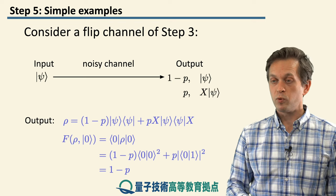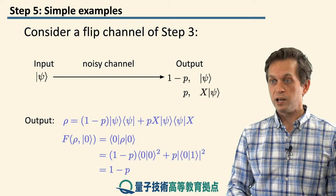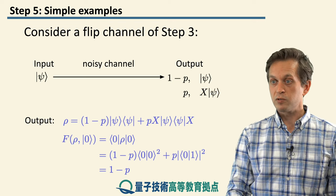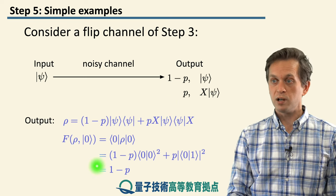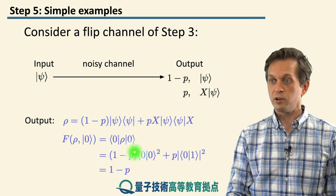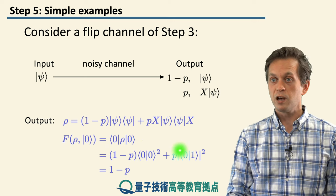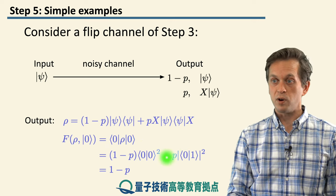And again, we substitute into our formula, and what we get, because the inner product between 0 and 0 is 1, and the inner product between 0 and 1 is 0, because they're orthogonal, we get that the final fidelity is 1 minus p.